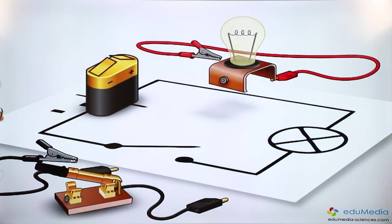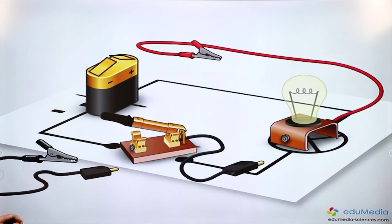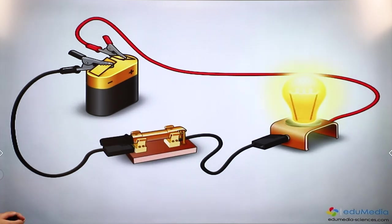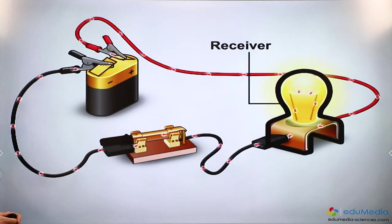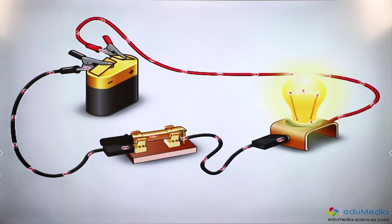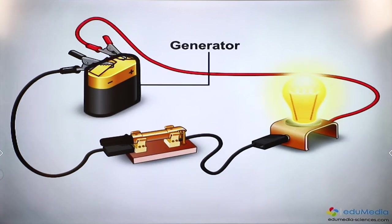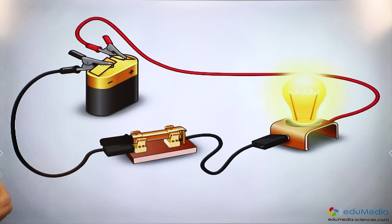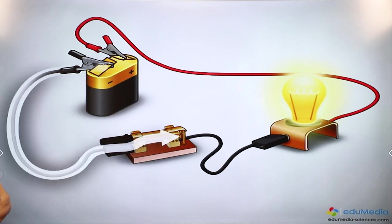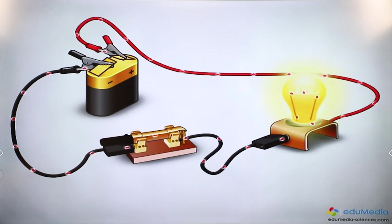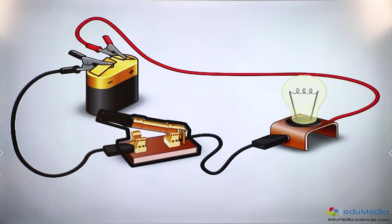An electrical circuit is made up of components linked to each other by electric wires. The objective is to transmit the energy contained in the movement of a large number of electric charges to a receiver. This movement of electric charges is called an electrical current. An electrical current flows if at least one of the components of the network is a generator.